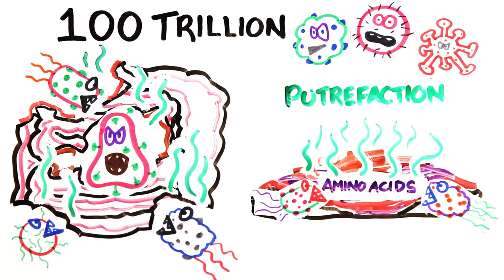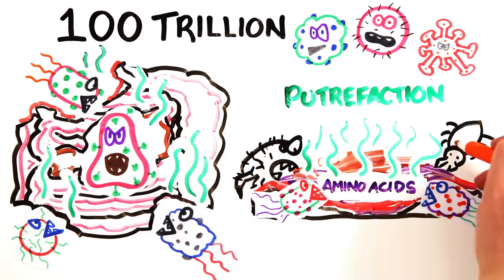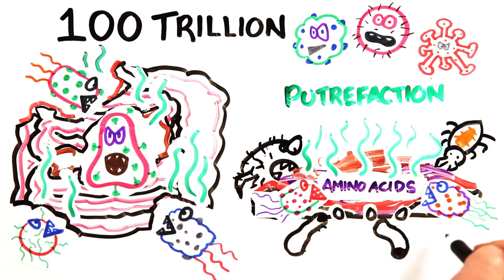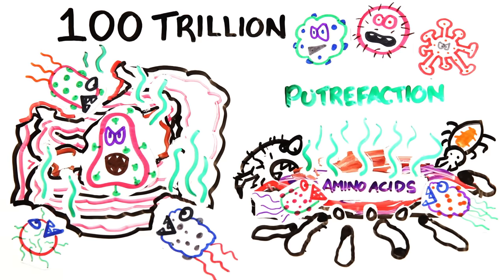These gases attract certain insects like mites, carrion beetles, and blowflies, which lay eggs in the rotting tissue. The eggs hatch within a day, and the larvae or maggots eat the tissue to survive until they mature.